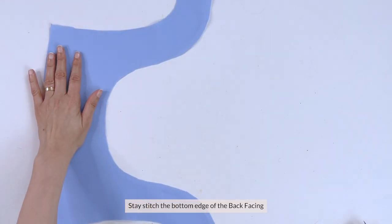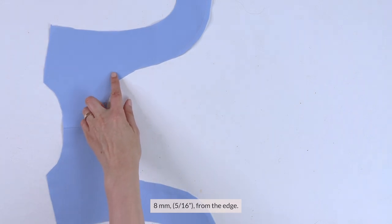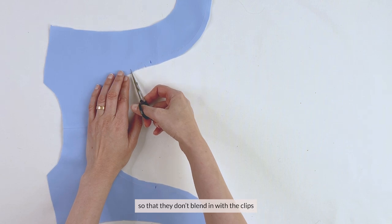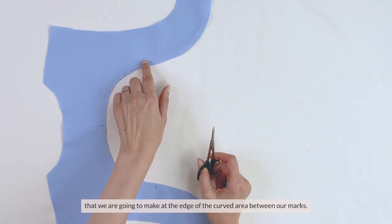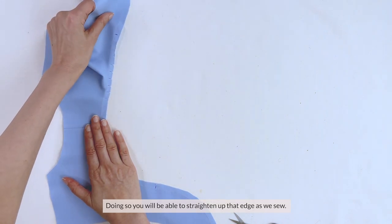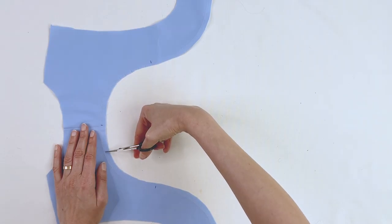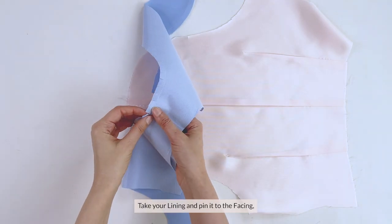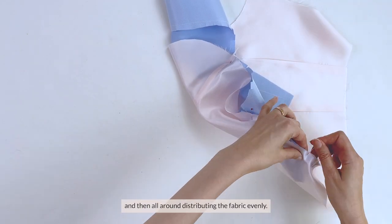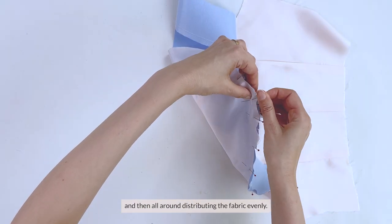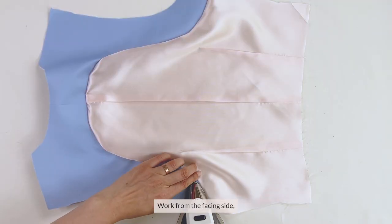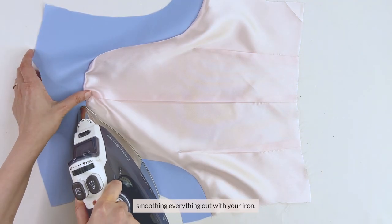Stay stitch the bottom edge of the back facing 8 millimeters or 5/16th of an inch from the edge and before we move on make sure that you mark the notches so they don't blend in with your clips that we're going to make at the edge of the curved area between our marks. Doing so you'll be able to straighten out the edge as we sew. So take your lining and pin it to the facing orienting yourself with the centers first then our marks and then all around distributing the fabric evenly. Sew and then press and work from the facing side smoothing everything out with your iron.